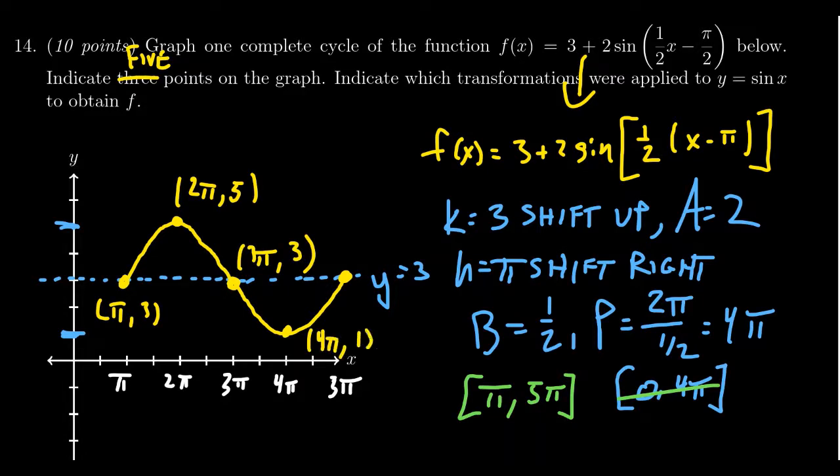We're going to get (4π, 1), and then we're going to get (5π, 3). So again, it said indicate three points—I'm labeling five because that gives us the whole graph right there. So we listed our transformations, we've drawn the graph, we have all the points indicated, and this then finishes question number 14.